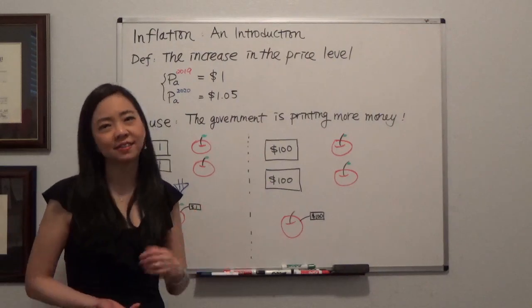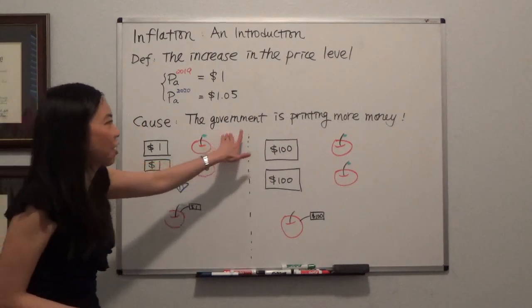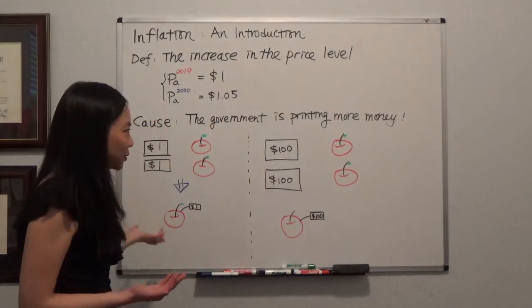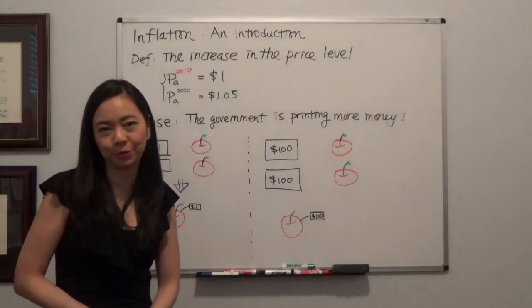So why is there an inflation rate? That's because the government is printing more money. I'm just going to use a very simple example to explain.